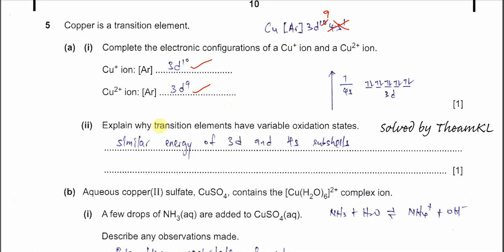Part 2: Explain why transition elements have a variable oxidation state. There is one key reason: the 4s and 3d subshells are quite close in energy. For example, after the first electron is removed from copper to form Cu⁺, it can very readily form Cu²⁺. Because the 4s and 3d are close in energy, the energy needed to remove electrons from 3d is not very different from 4s. That's why transition metals can easily form multiple oxidation states — similar energy of the 3d and 4s subshells.